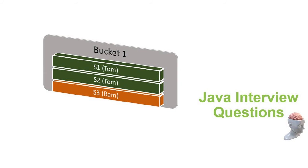Now we all know that objects by default are given an overridden equals method. Before going in depth, we want to understand what the default equals and hashCode do. For any object, the default equals always compares the memory location of two objects. And the default hashCode always returns the memory location of that particular object. That is the default implementation.